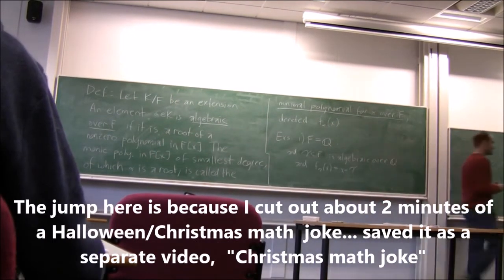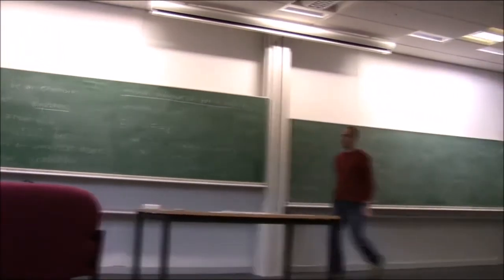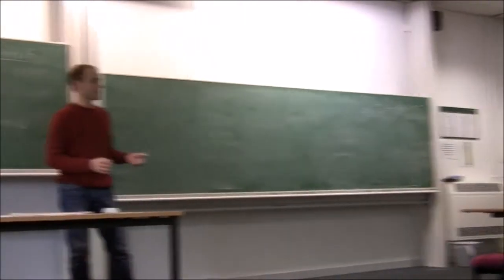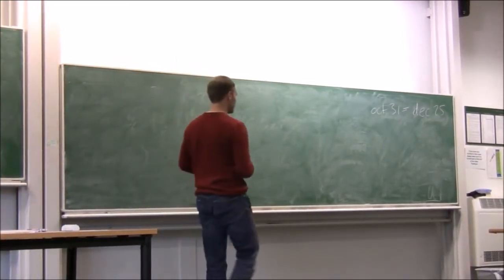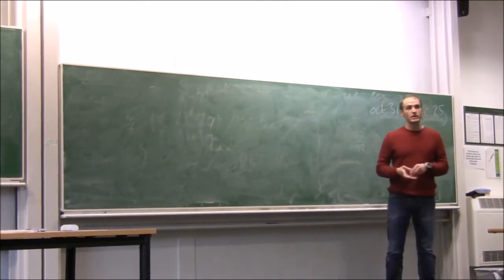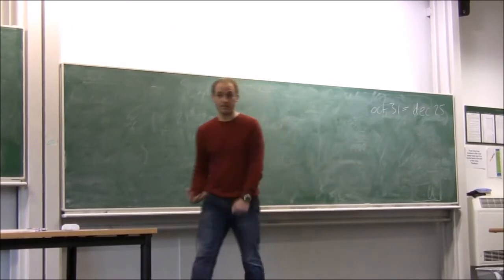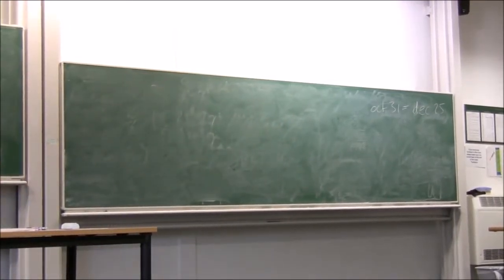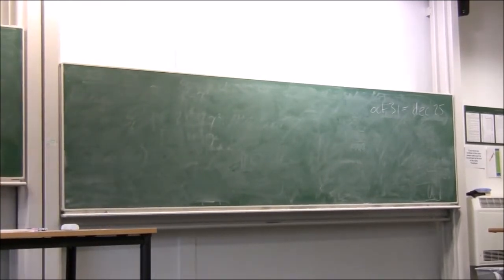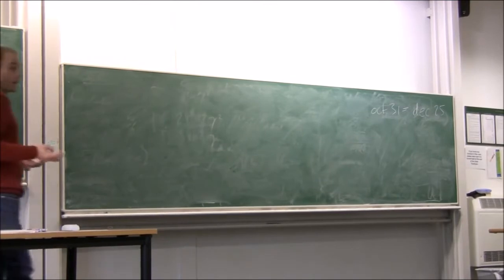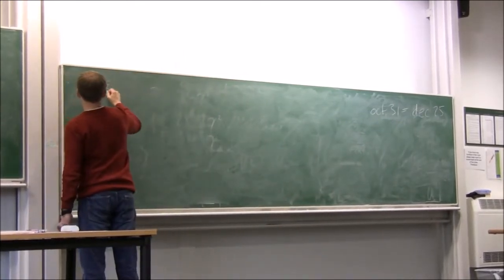Back to Galois theory. Can you give me some examples of numbers that are algebraic over Q but not actually in Q? You can just take any polynomial with coefficients in Q — all of the roots are algebraic. That's the definition: they're all roots of polynomials with coefficients in Q. So other examples of algebraic numbers are things like the square root of 2, the square root of 3, cube root of 2, and similar radicals.